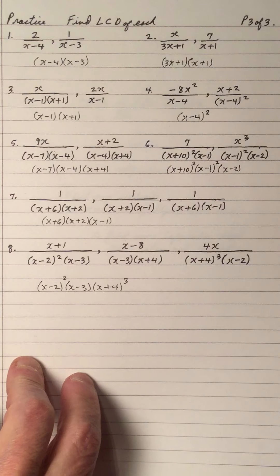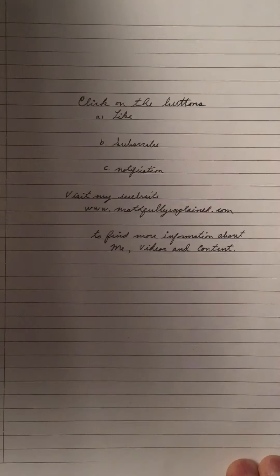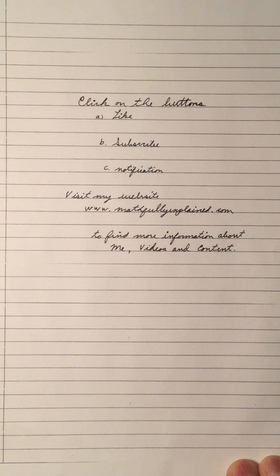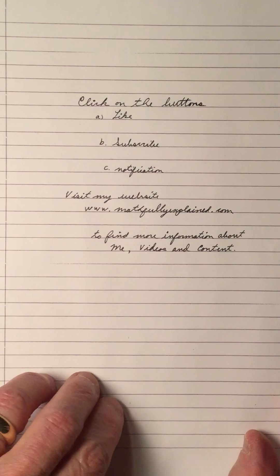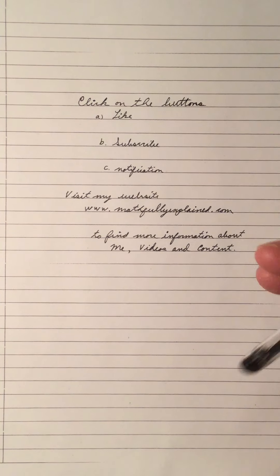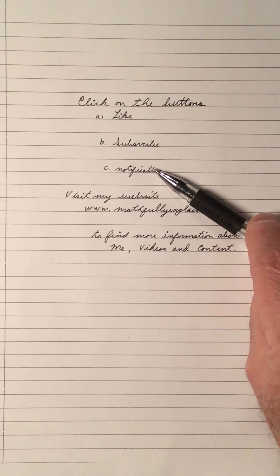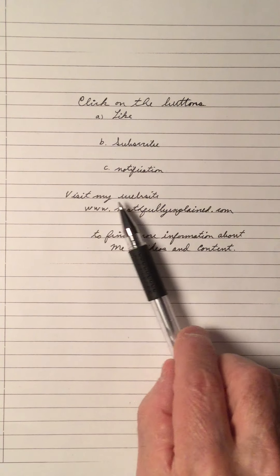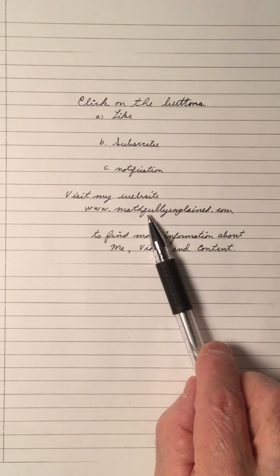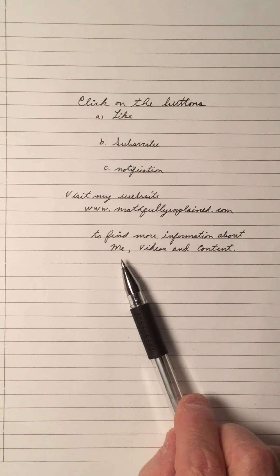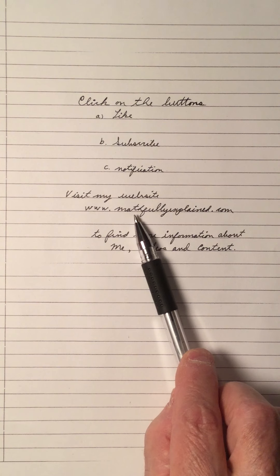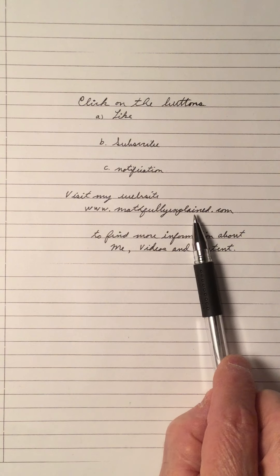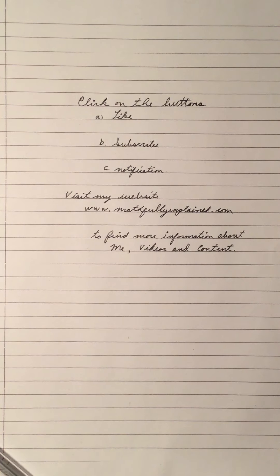Picking out the binomial LCDs is the same as picking out the monomials: pick out each factor and then pick out the highest exponent for that factor, which will represent each denominator. If you like my video, click the like button, the subscribe button, and the notification bell. Visit my website at www.mathfullyexplained.com to find more information about my videos and content on my YouTube channel, Math Fully Explained. Thank you for viewing my video.